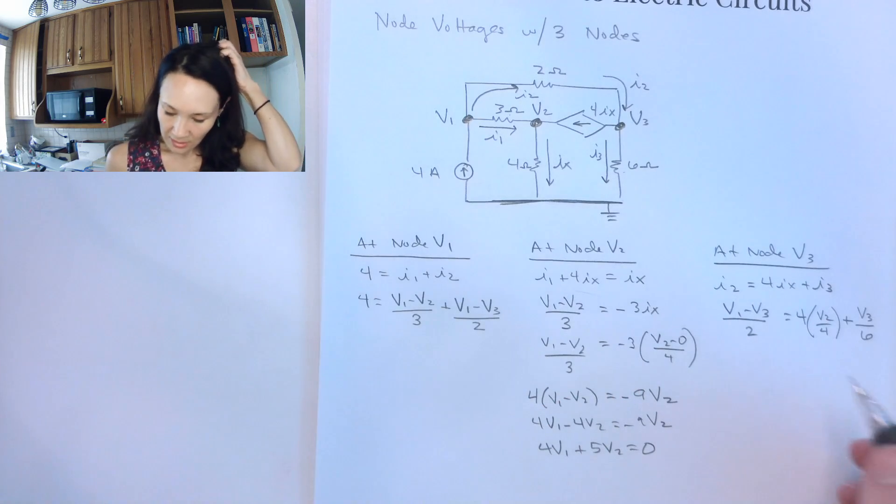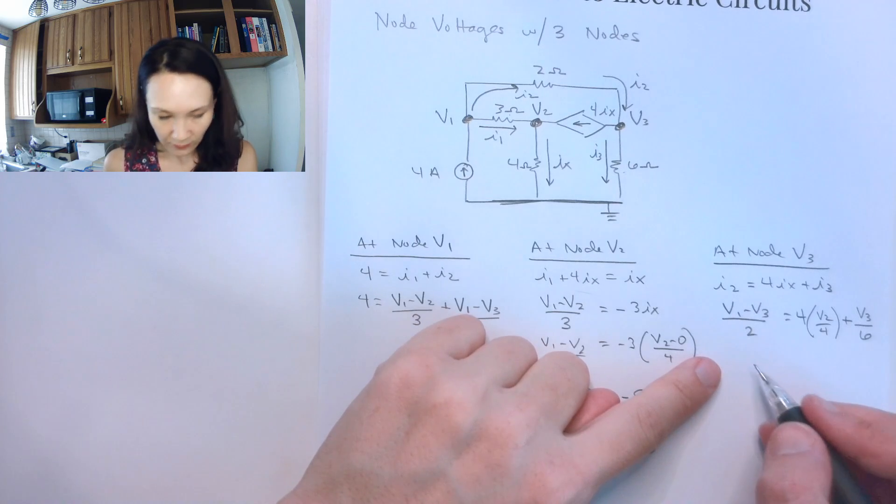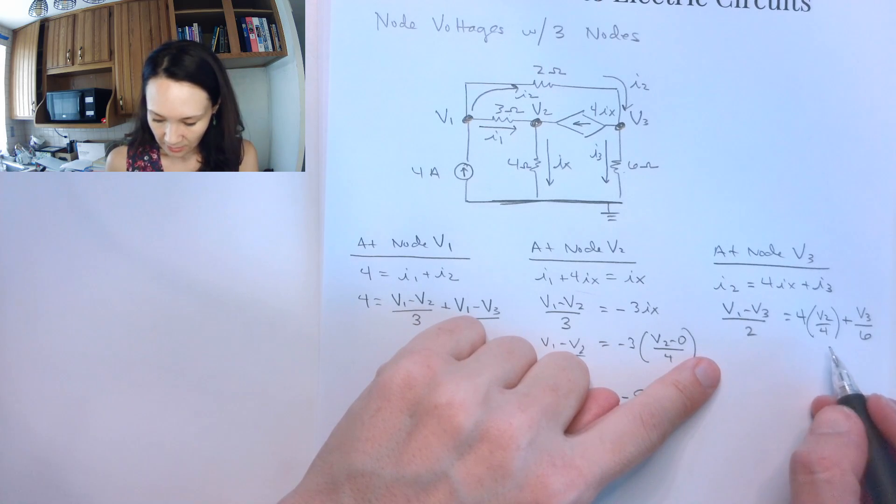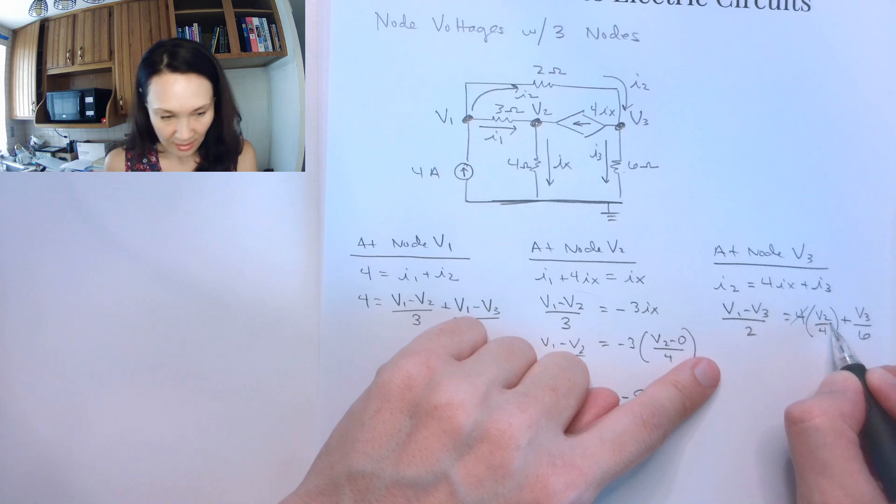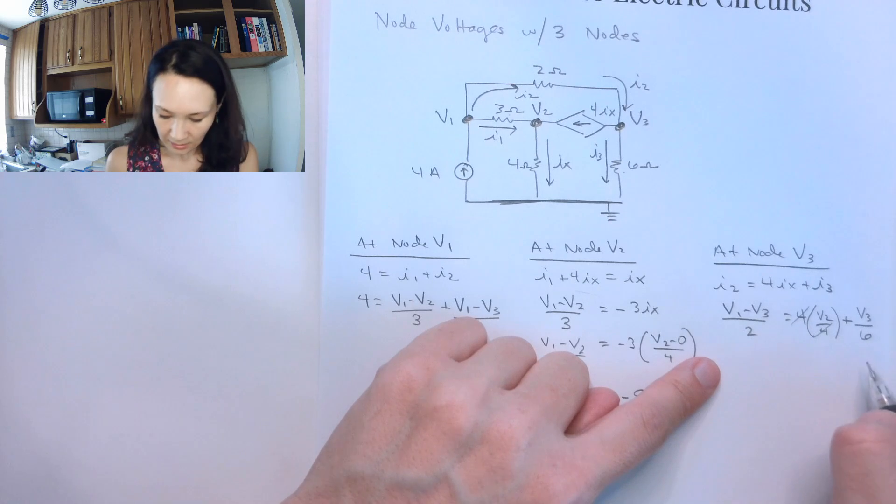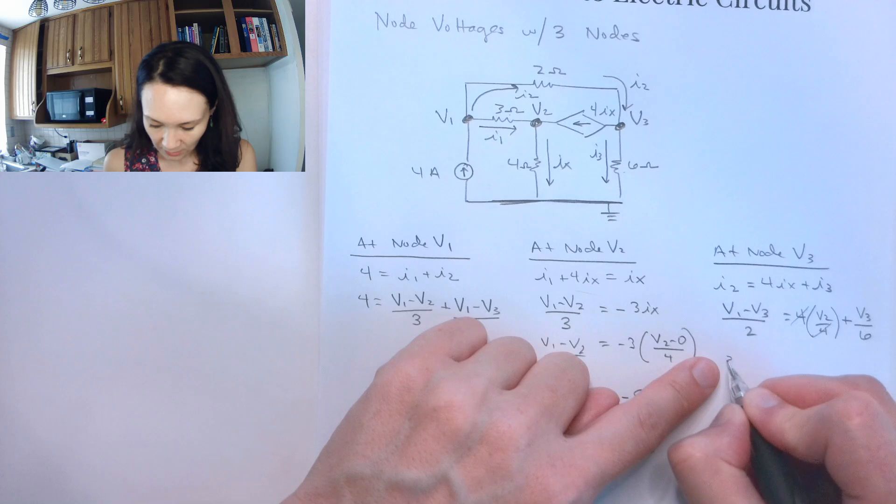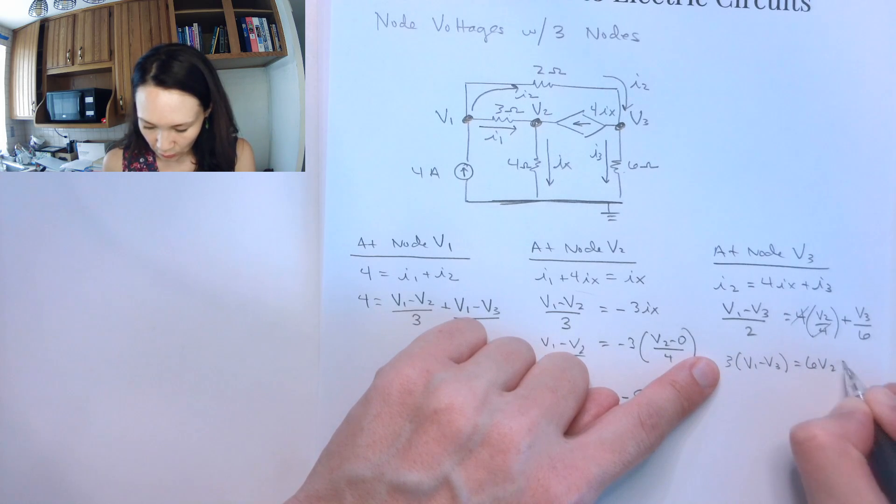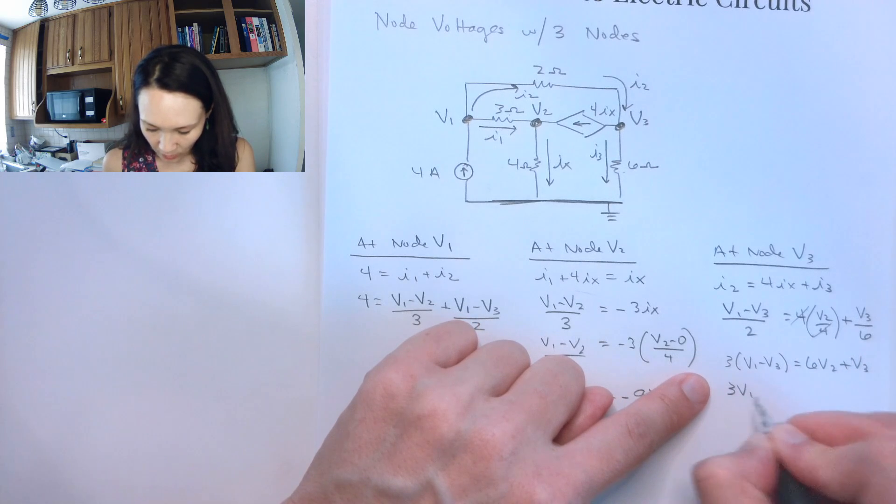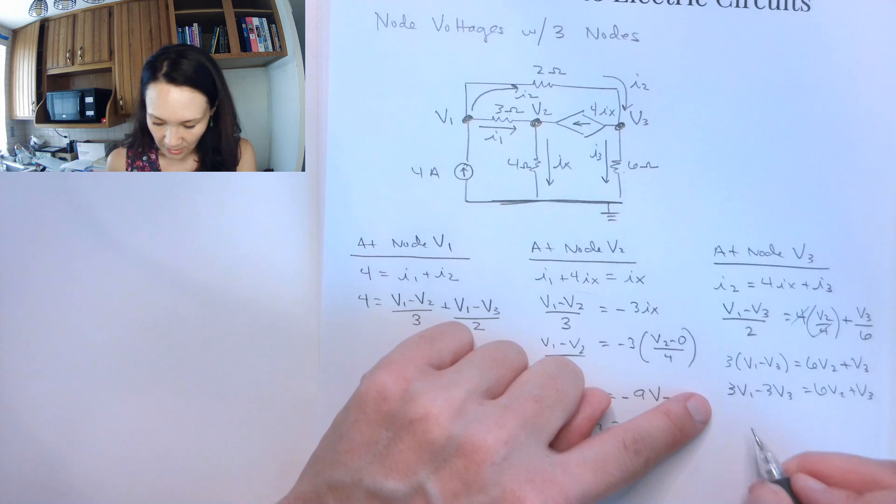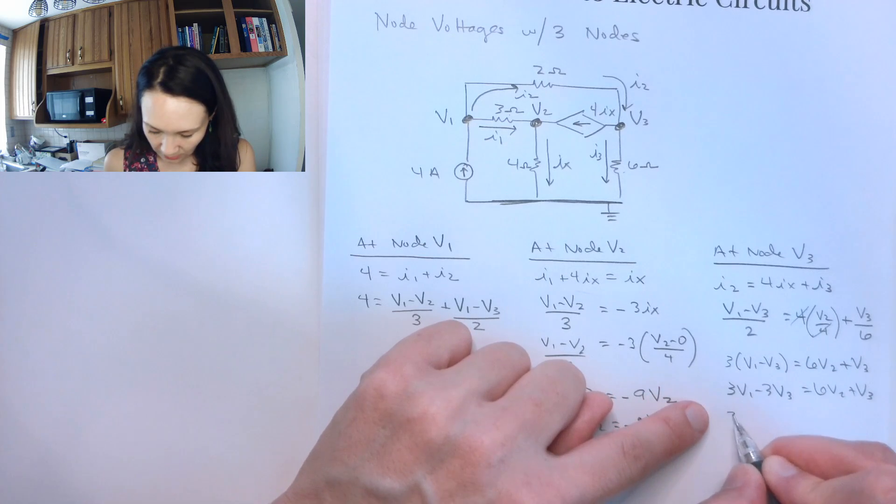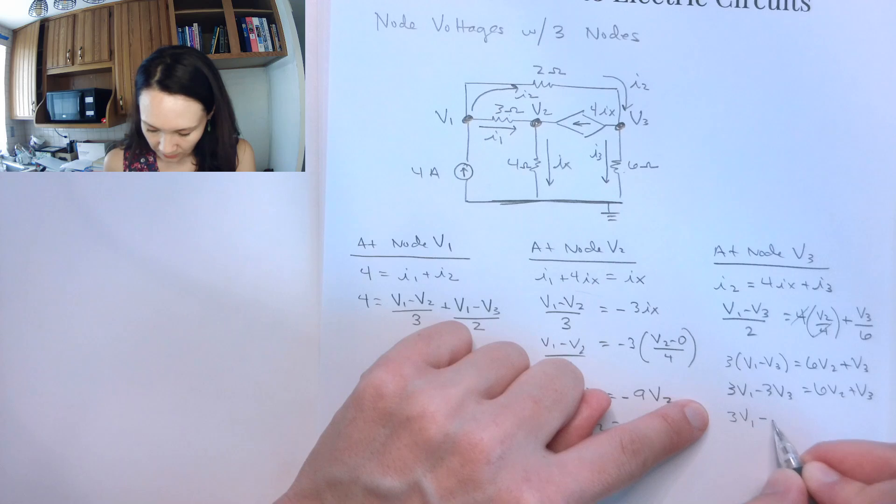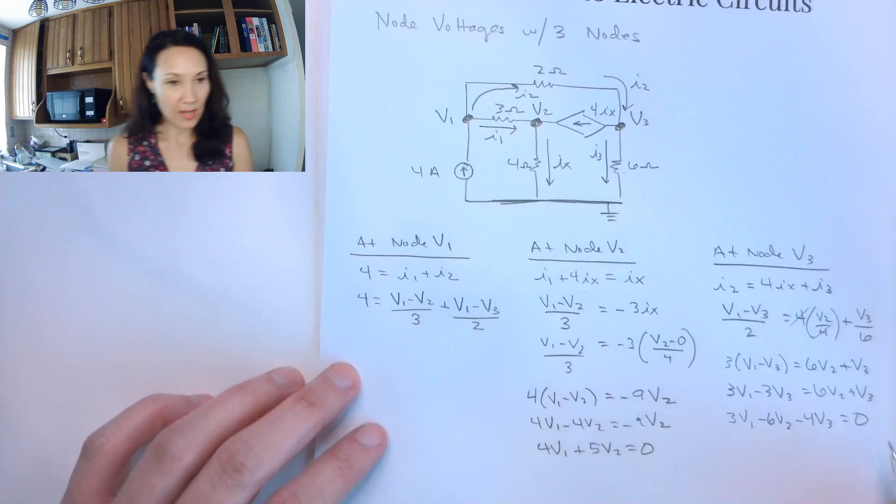Now, let me simplify this equation. If I just multiply everything by, let's see, these 4s will cancel. That's nice. And I get that if I multiply everything by 6, this will give me 3 times the quantity V1 minus V3 is equal to 6V2 plus V3. 3 V1 minus 3 V3 is equal to 6 V2 plus V3. So this gives me that 3 V1 minus 6 V2 minus 4 V3 is equal to 0. And that's in standard form.